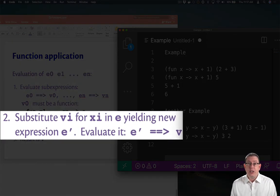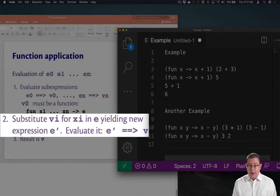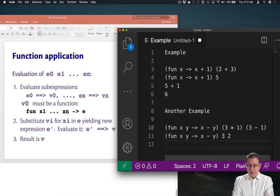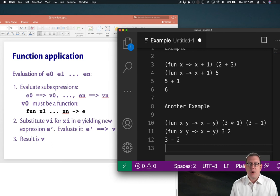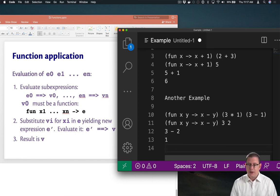Now we can substitute each of those values for the name inside the body. So we've got x minus y and we substitute 3 for x and 2 for y. That's our sub-expression e prime as the result of the substitution. And finish by evaluating that to a value: 3 minus 2 evaluates to the value 1.